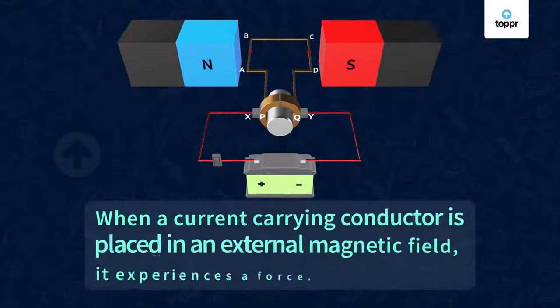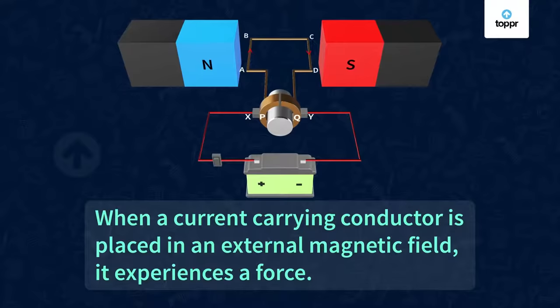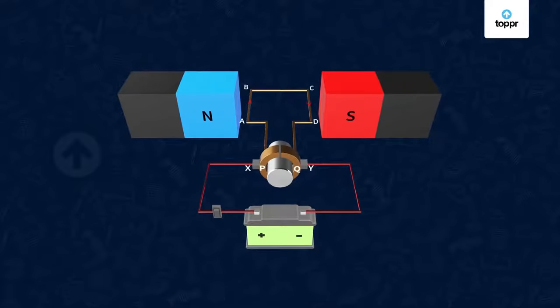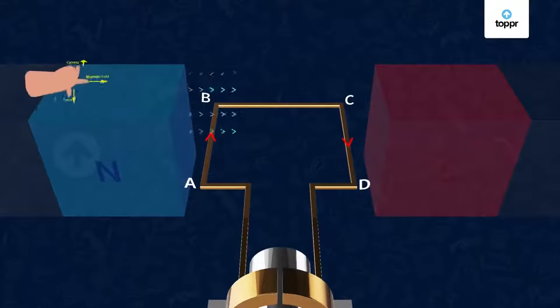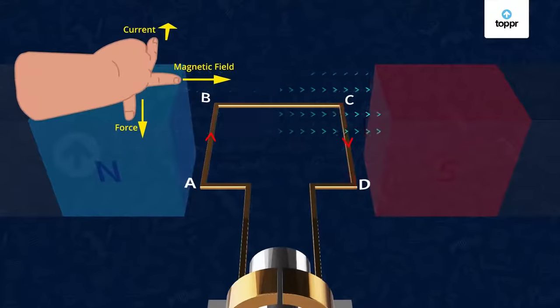We know that when a current carrying conductor is placed in an external magnetic field, it experiences a force on it. And the direction of force can be found by using Fleming's left-hand rule.